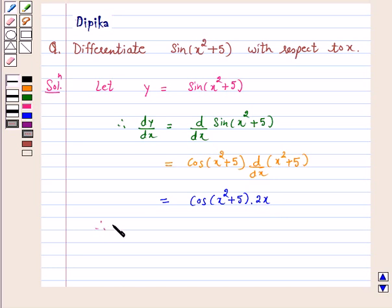Hence, dy/dx is equal to 2x cos(x² + 5). We have differentiated sin(x² + 5) with respect to x, and our answer is 2x cos(x² + 5).